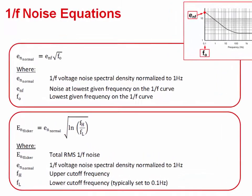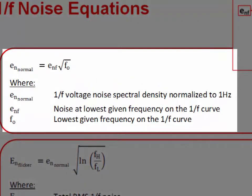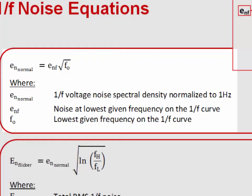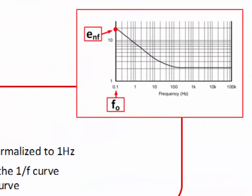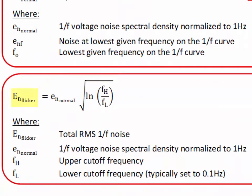Let's move on to the 1 over f noise equations. The first equation gives the 1 over f noise normalized to 1 hertz given by E sub n normal. This means that we take a point on the 1 over f curve and translate the spectral density to a level corresponding to what would be read at 1 hertz. In general, it is best to choose E sub n f at the lowest frequency possible because this will ensure that 1 over f noise is dominant. The second equation computes the total RMS noise from the 1 over f region. Notice that the equation uses the normalized 1 over f noise from the previous equation as well as both the upper and lower cutoff frequency. It's easy to understand why the upper cutoff frequency is used because it represents the same system bandwidth limitation as seen in broadband noise. But why do we need a lower cutoff frequency limitation?